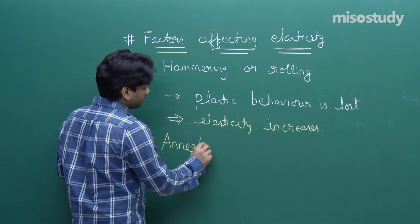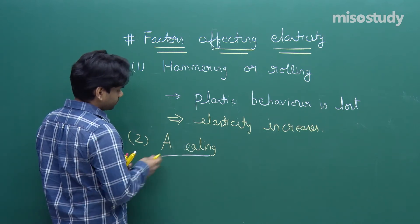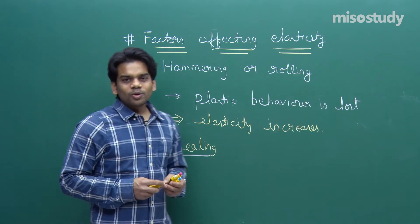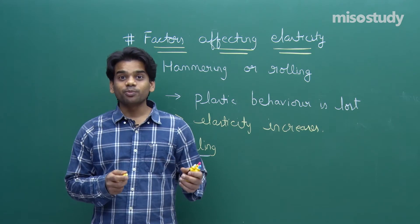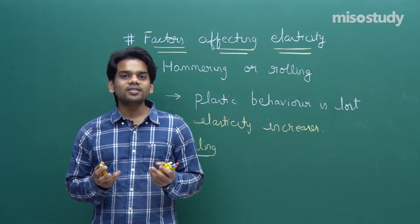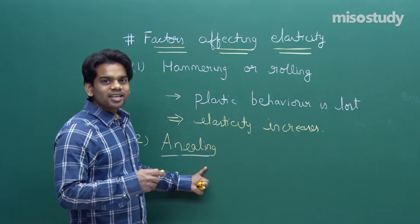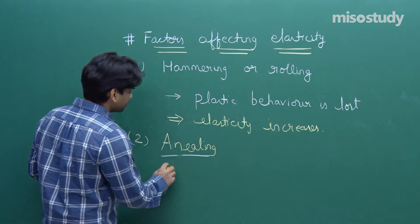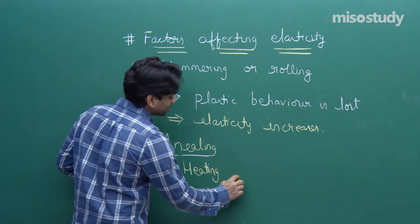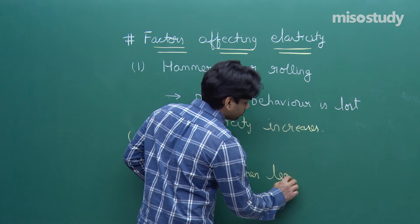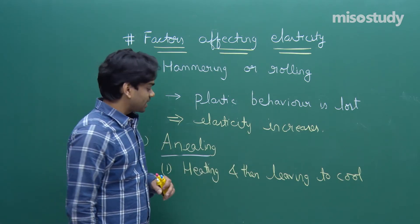The second factor is annealing — heating a metal to high temperature and then leaving it to cool down slowly. Iron smiths heat up the metal and leave it to cool slowly so the metal can be converted to suit the required condition. Upon annealing — heating to high temperature and leaving to cool — the metal becomes more ductile, meaning it can be made into sheets.